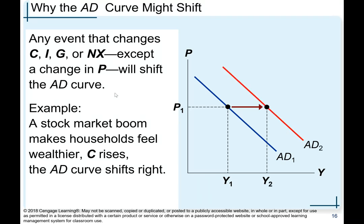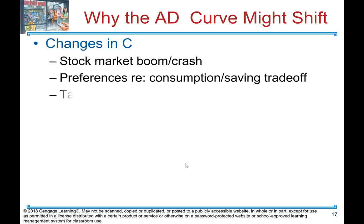Why might the aggregate demand curve shift? Any event that changes consumption, investment, government spending, or net exports — except a change in price — will shift aggregate demand. For example, a stock market boom makes households feel wealthier, changing consumption, and aggregate demand shifts to the right. Changes in consumption include stock market booms, preferences and the consumption-savings trade-off, and tax hikes — these shift the aggregate demand curve.